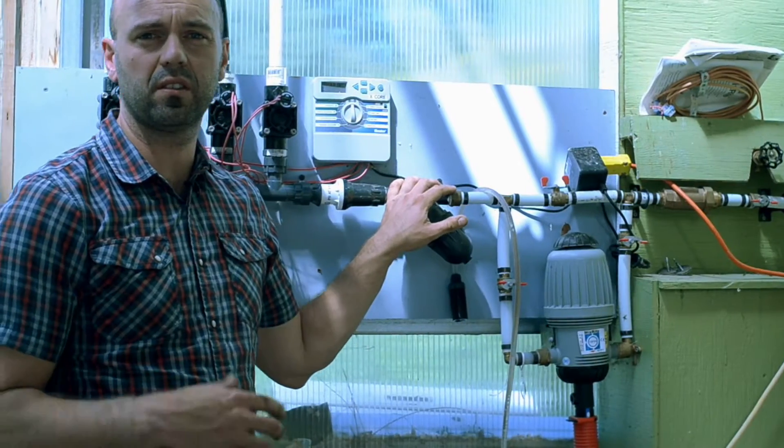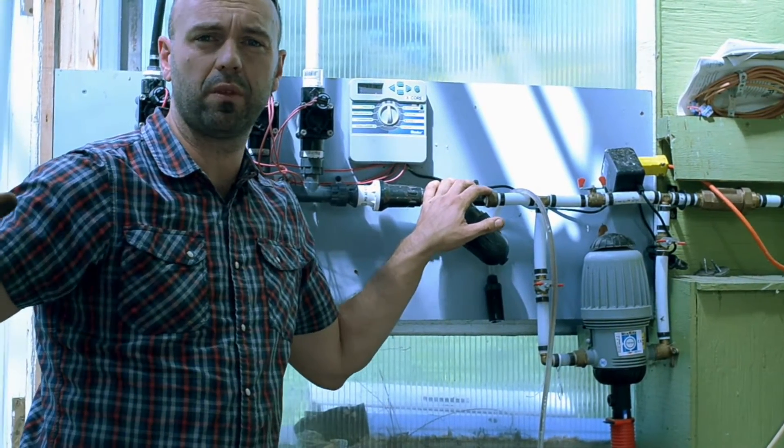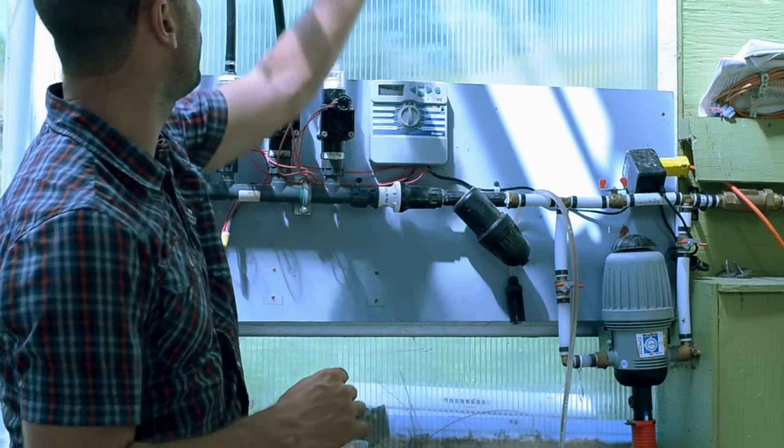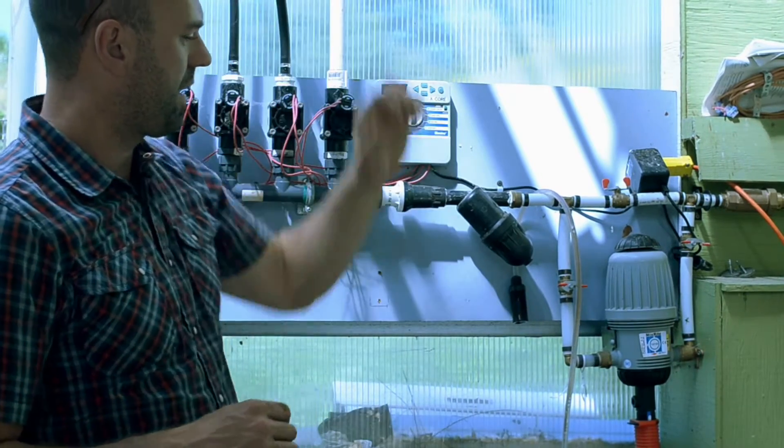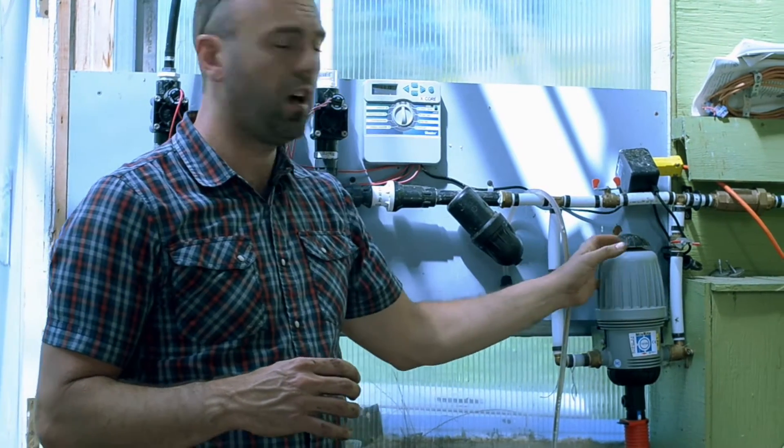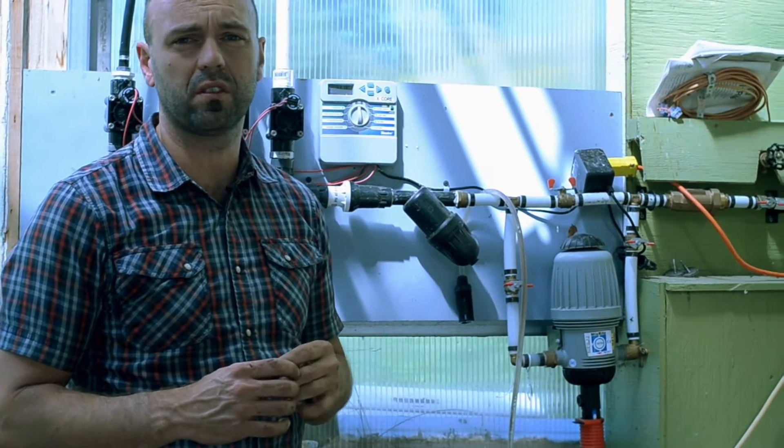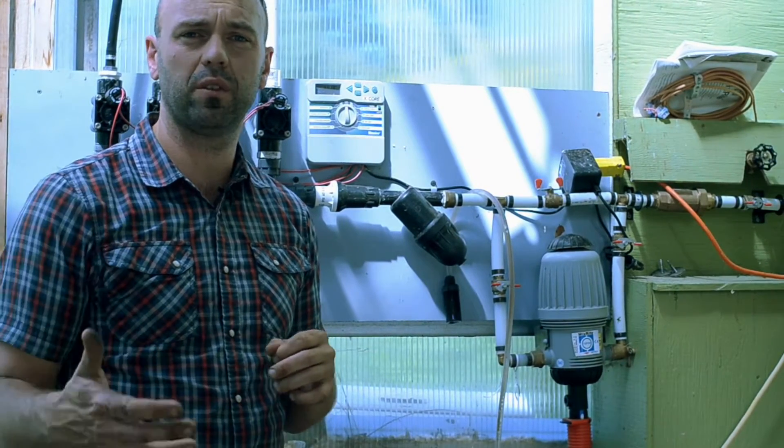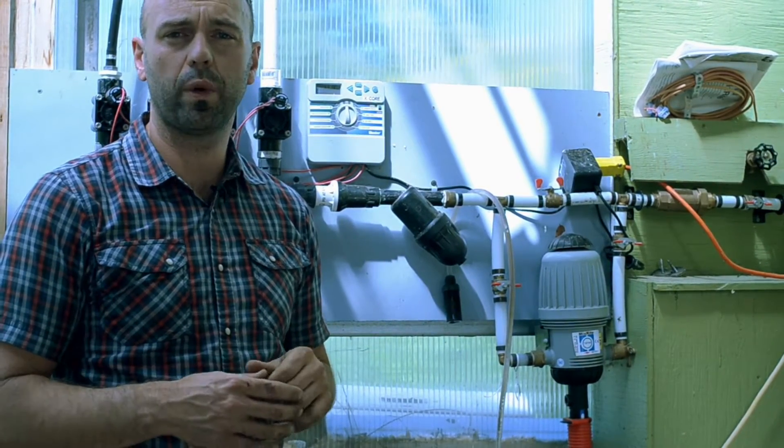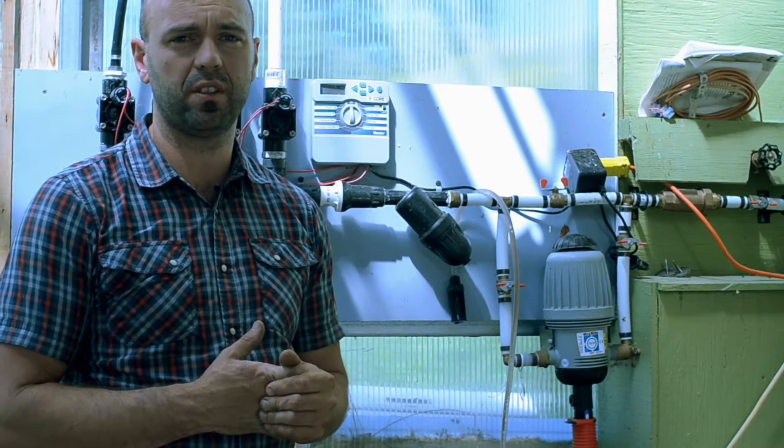This irrigation system manages all of the internal irrigation within the greenhouse but we also have a line going out into the food forest. This system hooks into our rainwater harvesting system so we can either irrigate with dechlorinated city water or we can irrigate with rainwater that we've harvested through the season.